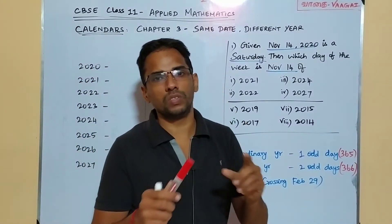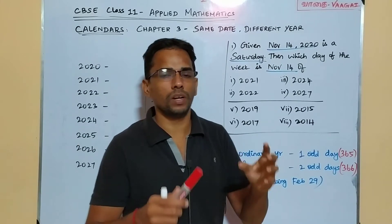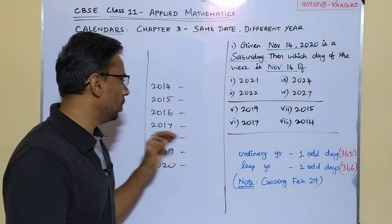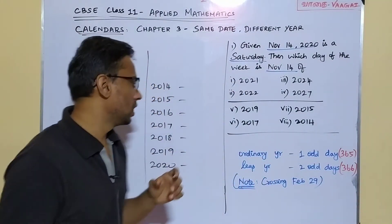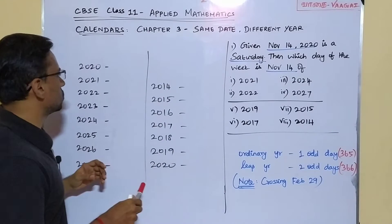One more important thing to note: the important notice is crossing the date February 29. Whether we are crossing that February 29 or not is really, really important — that only determines how we are going to take these odd days. With this knowledge and this concept, let us try to solve our question.